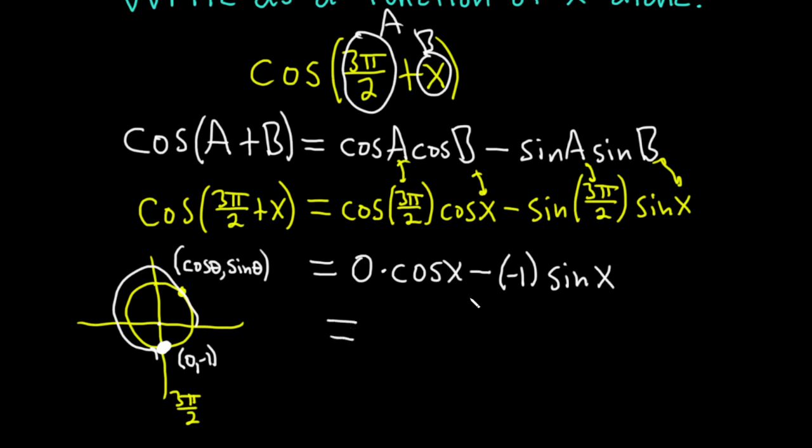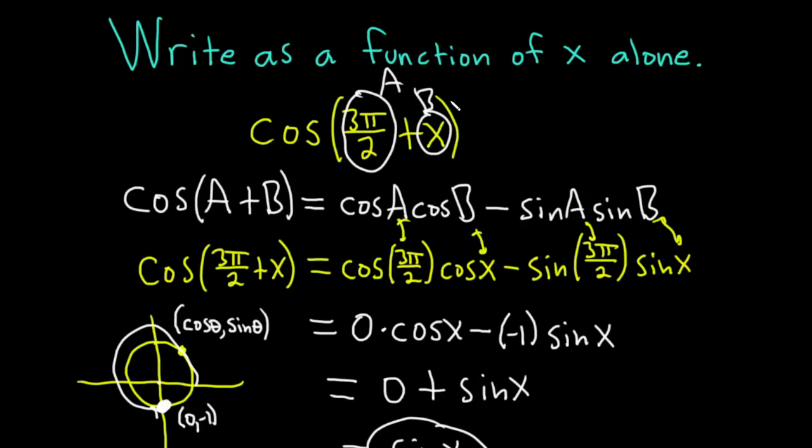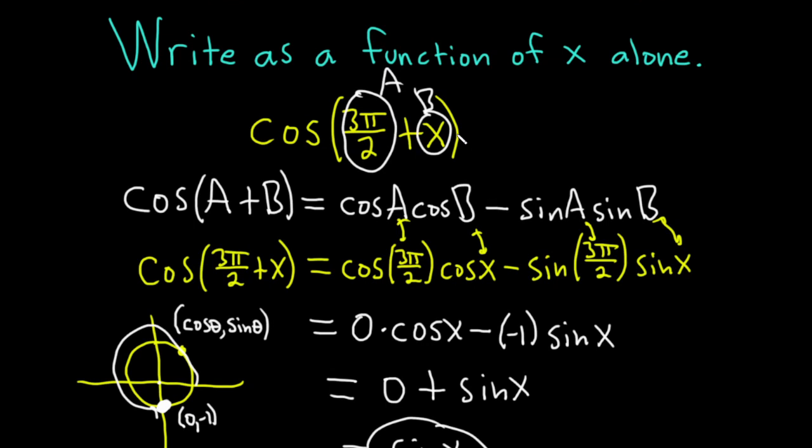This is equal to, well this is going to be 0 plus sine x, right, negative and negative is positive. So then this is equal to the sine of x. So we've written it as a function of x alone, which is what the directions were. Pretty cool. So this is actually equal to sine x. Pretty cool. Good luck.